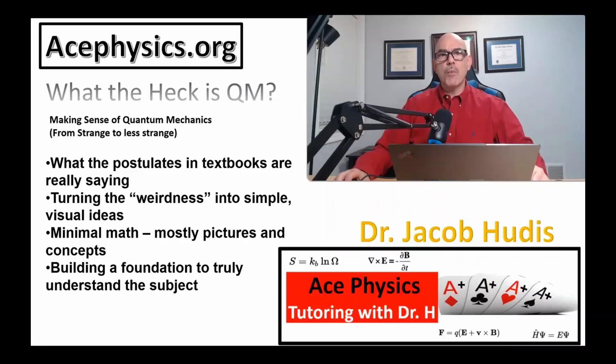These postulates come straight from one of the classic books in the field, by Claude Cohen-Tannoudji, who won the Nobel Prize in Physics in 1997. As far as quantum mechanics books go, it's great.